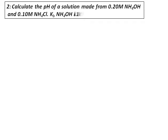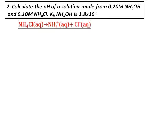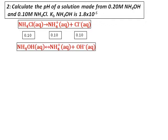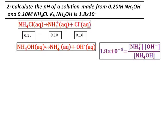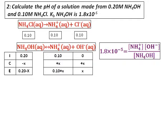Now let's do a question in which a base is involved. Calculate the pH of a solution made from 0.20 molar ammonium hydroxide with 0.10 molar ammonium chloride added into it. The Kb of ammonium hydroxide is given. Similar to the previous equation, write the equation for ammonium chloride. The concentrations of ammonia, ammonium ions, and chloride ions from ammonium chloride are given. Set up the equilibrium equation for ammonium hydroxide, noting in the ICE table that ammonium ions start at 0.10 — the contribution from ammonium chloride.